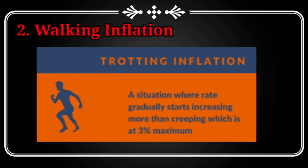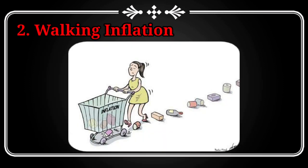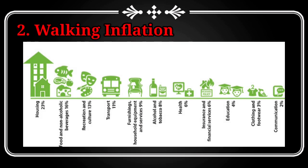Second is walking inflation. This is strong or destructive inflation between three to ten percent a year. It is harmful to the economy because it heats up economic growth too fast. People start to buy more than they need to avoid tomorrow's much higher prices. This increased buying drives demand even further, so that suppliers can't keep up — and neither can wages.